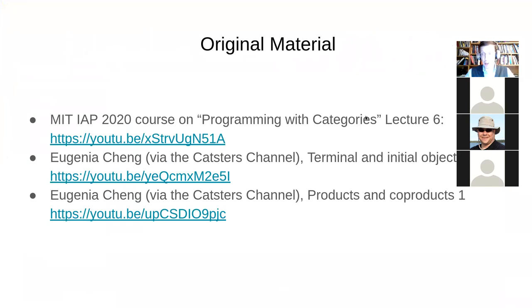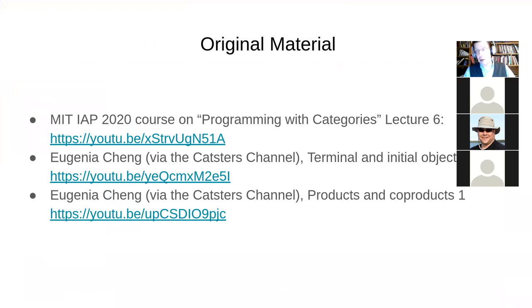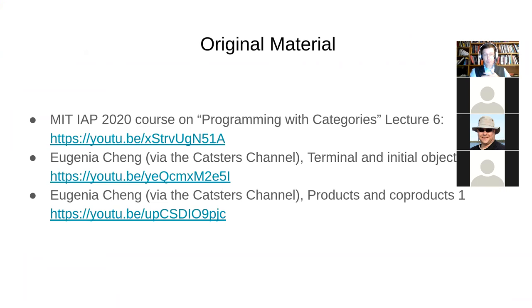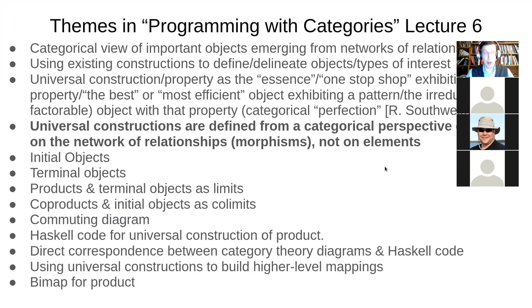I'd asked you to watch the Programming with Categories lecture six, where Brendan Fong and Bartosz Milewski talk about some universal constructions and give reference to the universal properties. I also asked you to watch Eugenia Cheng's talks through CATSTRS on terminal and initial objects, and products and co-products. If you continue on from both of these, there's some wonderful material on co-products and initial objects in later versions of this series.